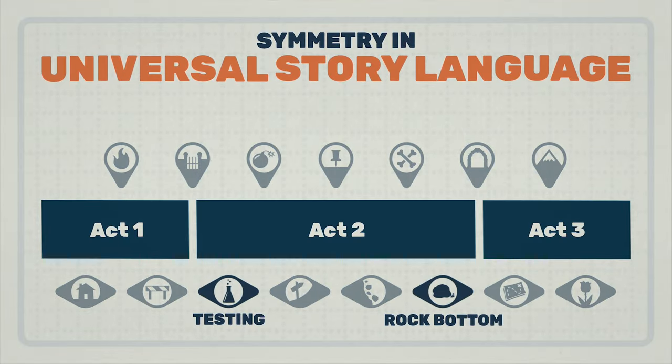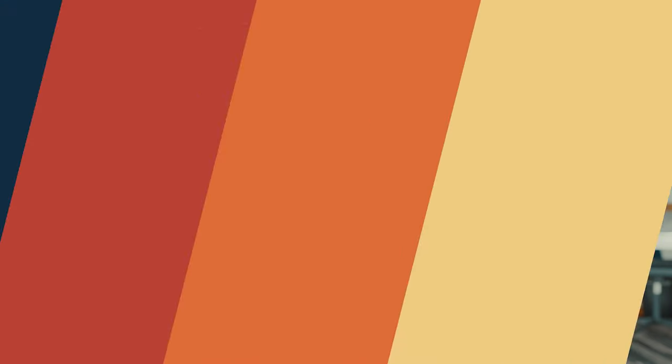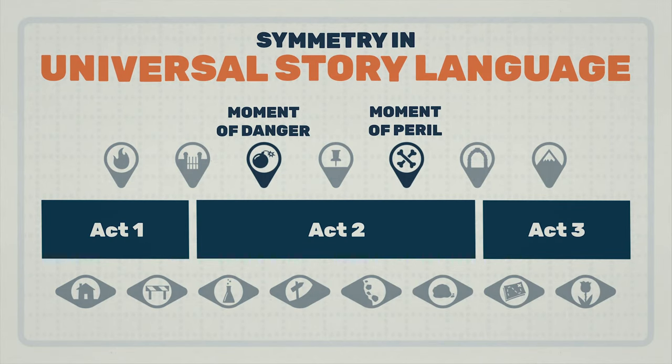The only phases that aren't directly mirrored are the testing and the rock bottom, except that they both commonly contain a montage, though for very different reasons. The moment of danger and moment of peril are all about the antagonist, or whatever the protagonist is up against. The moment of danger usually shows us a glimpse of the antagonist, which foreshadows the attack on the protagonist in the moment of peril. They are both negative moments and derive from the idea of pinch points, which help add conflict to your story.